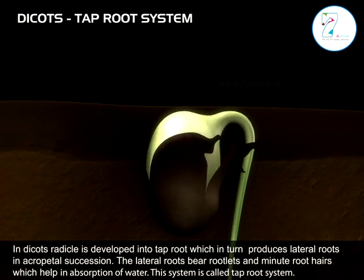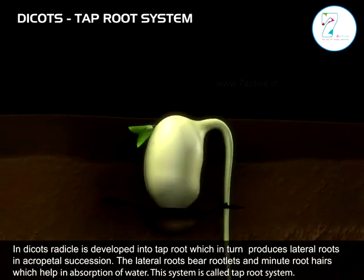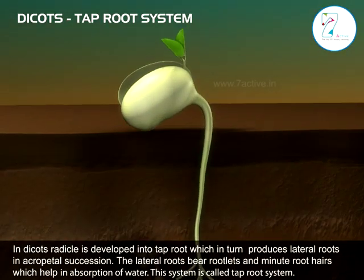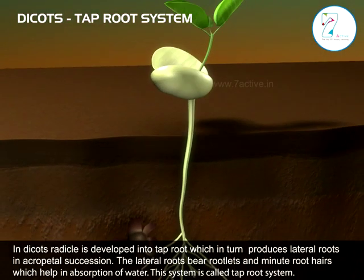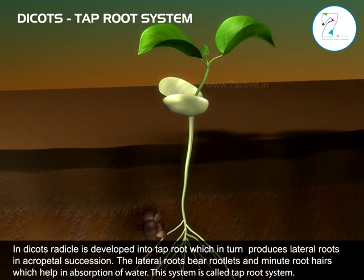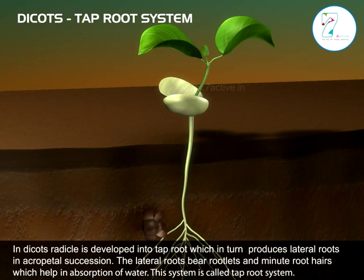the radical is developed into a taproot, which in turn produces lateral roots in acropetal succession. Lateral roots bear rootlets and minute root hairs which help in absorption of water. This system is called the taproot system.